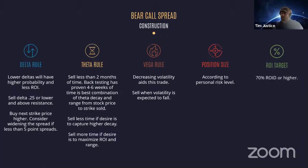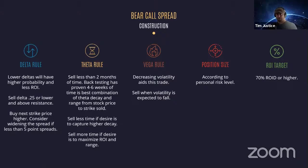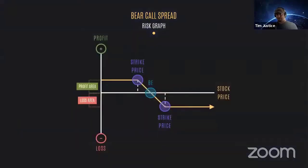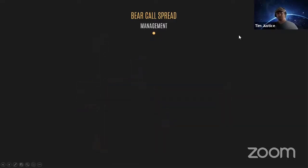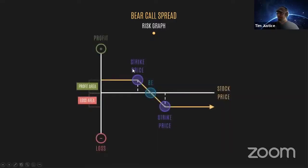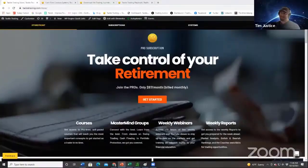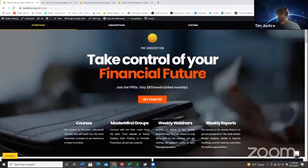For my ROI target, I use the Tackle Theta spreadsheet to build those targets. We're looking for 70% ROI or higher for a bear call spread. This is the risk graph of what it looks like visually once you build it into your analyze tab. What I want to do next is go right in and build one of these for you so you get an example of what I'm thinking about here today.